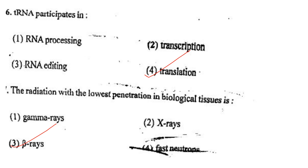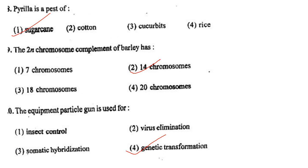Next one: The radiation with the lowest penetration in biological tissues is option 1, gamma rays; option 2, X-rays; option 3, beta rays; option 4, fast neutrons. Answer is option 3: beta rays.